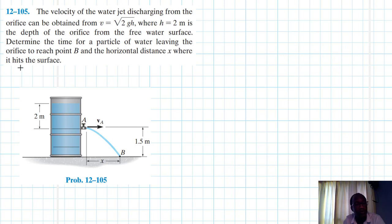The problem reads the velocity of the water jet discharging from the orifice can be obtained from v equal to root of 2gh, where h is equal to 2 meters and is the depth of the orifice from the free water surface.